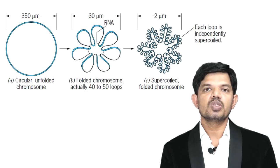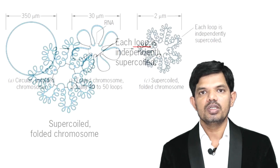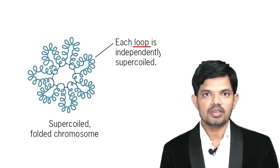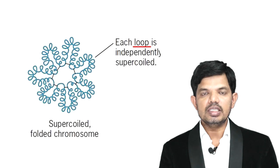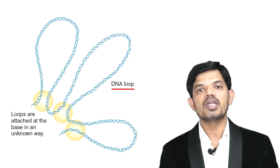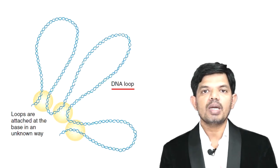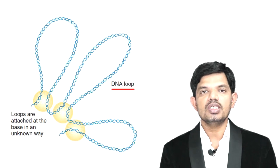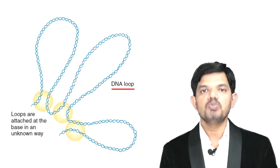During folding of this DNA, loop formation occurs. This loop formation depends on the species, and the number of loops also varies from species to species. Because of this loop formation, the DNA undergoes folding and the huge size of the DNA can fit within the smaller cell size.